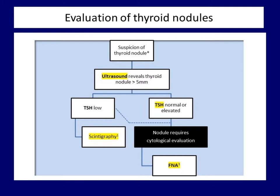In other words, if we refer all nodules larger than 1 cm into the black box, the indication of FNA is not influenced by the ultrasound pattern — the size of the nodule is the only feature which affects our decision. So was the time wasted? No, surely not. Indeed, reviewing the previous chapters was worthwhile, because ultrasound and ultrasound characteristics are used for purposes other than selection of patients for cytology.